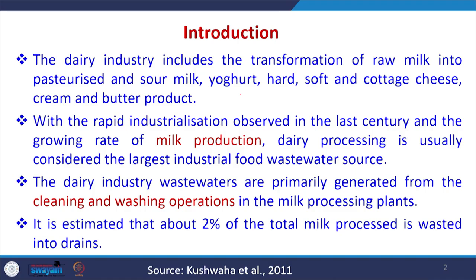Today we are going to take the case of the dairy industry and how wastewater is managed there. The dairy industry includes the transformation of raw milk into pasteurized or sour milk, yogurt, hard soft and cottage cheese, and cream and butter products. With the rapid industrialization observed in the last century and the growing rate of milk production, dairy processing is usually considered the largest industrial food wastewater source.